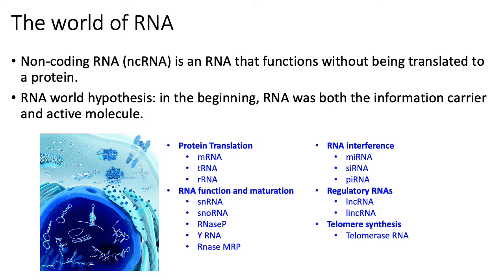There's a large number of people who think that RNA has played a much more central role in information carrying and molecular activity in the cell than protein-centric people would have you believe. At least in the human genome, there are well over 80,000 different non-coding RNAs that have been identified so far. Here's just an incomplete list of all the different types of non-coding RNAs besides mRNA that are encoded in the genome.